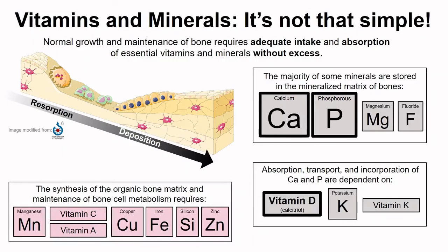Fluoride is something you might think about with teeth or toothpaste or in the water. Fluoride can be part of fluoroapatite — basically a substitution for hydroxyapatite — and this is found in our teeth. We can also find this crystal in our bones.